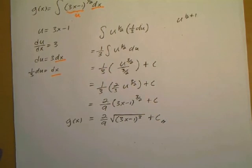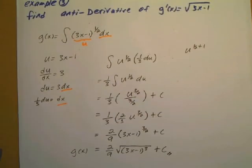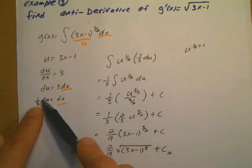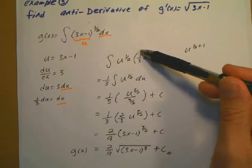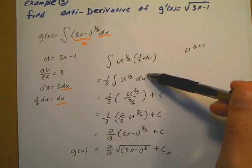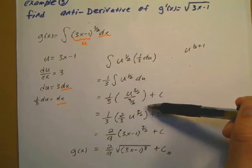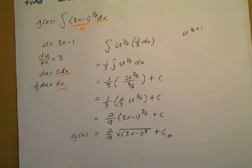And that's the anti-derivative. The only difference here was the additional constant 3 in the du, which I divided over to get 1 third. That 1 third gets factored out, then I apply the power rule and simplify from there.